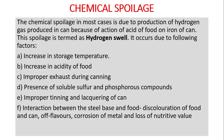Chemical spoilage in most cases is due to the production of hydrogen gas inside the can, because of the action of the acid in food on the iron of the can. This spoilage is termed as hydrogen swell. The chemical spoilage is also known as hydrogen swell.